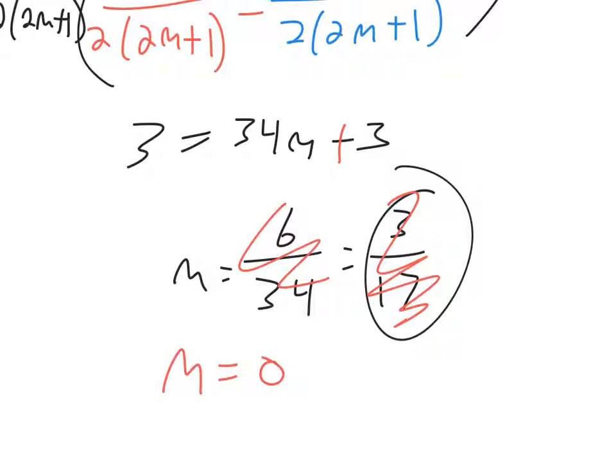When you solve this equation, again, just the wrong sign there. When you solve that equation, you should get m equals 0.